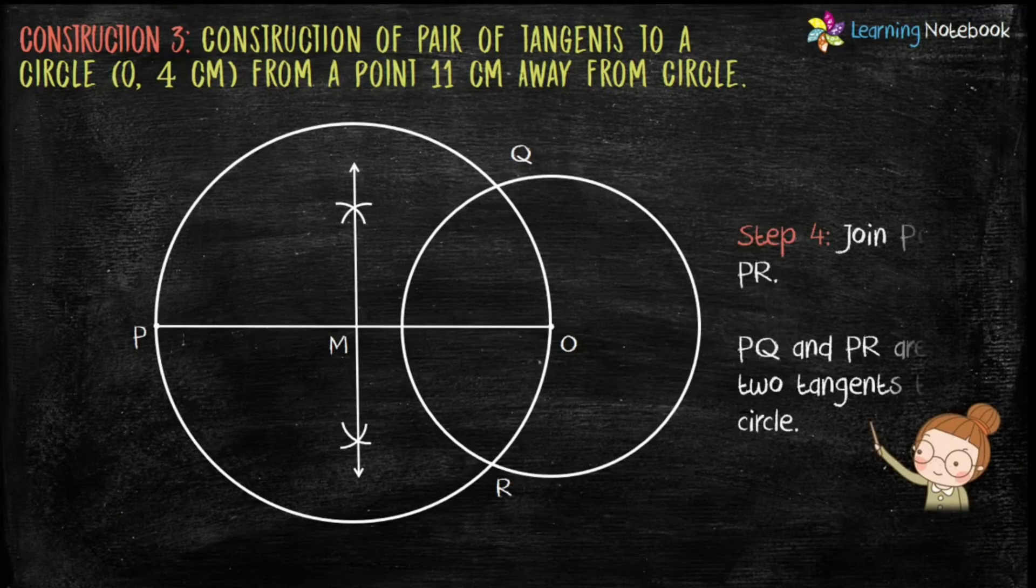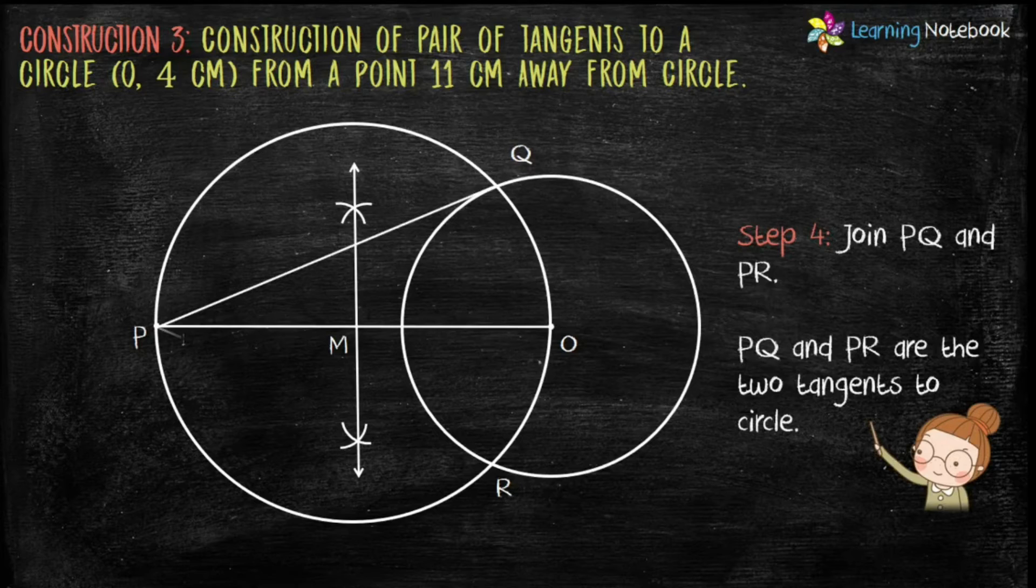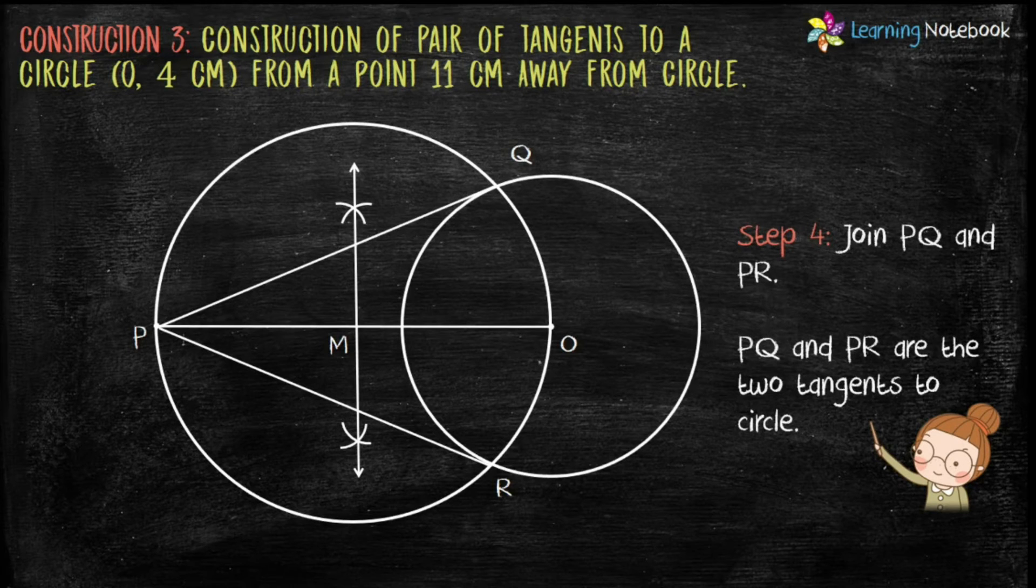Step 4 is join PQ and PR. So these two are the tangents drawn from a point outside the circle. In this way we can construct a pair of tangents from a point outside the circle.